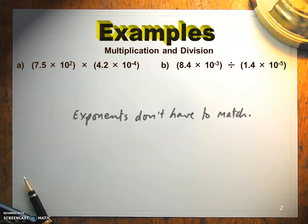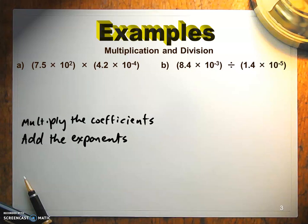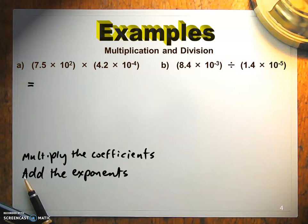You multiply the coefficients together and you're just going to combine the exponents on the 10. So in this case, you multiply 7.5 times 4.2, use your calculator for that, and combine the exponents on the 10 by adding the exponents. For multiplication, you add the exponents, and that's going to make this 10 to the negative 2.